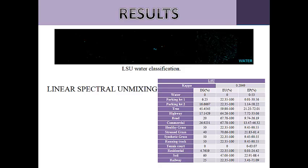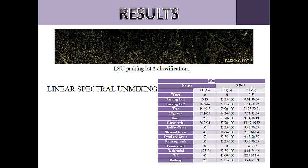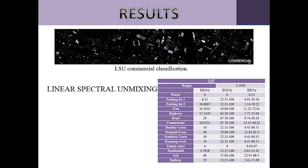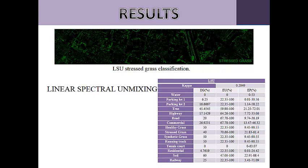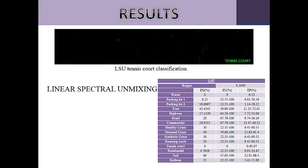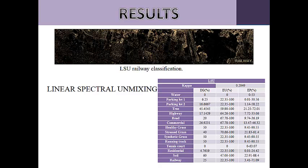From the Linear Spectral Unmixing, a final classification map was obtained for each class of information. The classes produced were: Water, Parking Lot 1, Parking Lot 2, Trees, Highway, Commercial, Healthy Grass, Stress Grass, Synthetic Grass, Running Track, Tennis Court, Residential, Soil, and Fairway. The kappa coefficient indicates that it has about 20% chance of more success at the time to sort through this method than with a random classification.